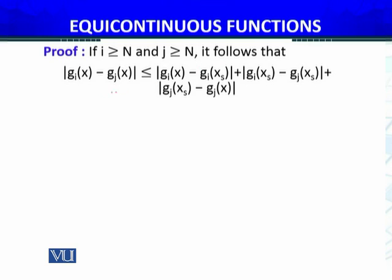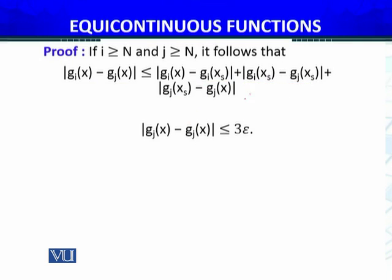If i ≥ N and j ≥ N, it follows that |g_i(x) − g_j(x)| can be bounded by adding and subtracting g_i(x_s) and g_j(x_s). Using the triangle inequality and the modulus property, all these absolute values are less than epsilon, giving us a total bound of 3 epsilon.